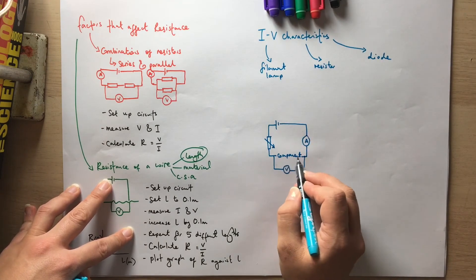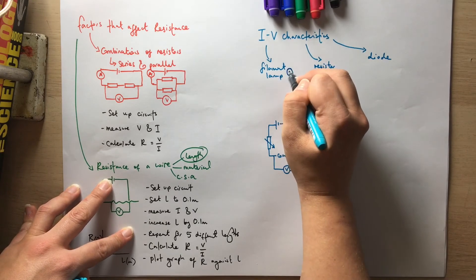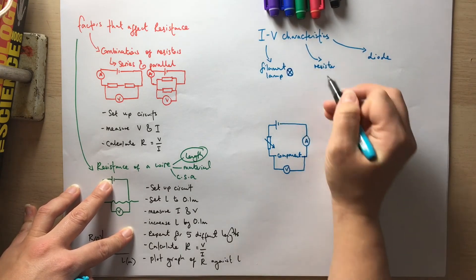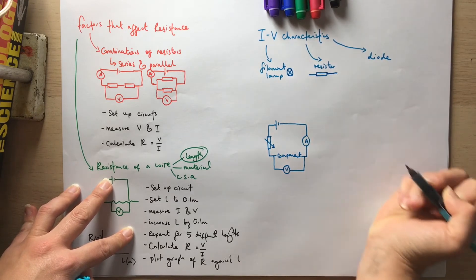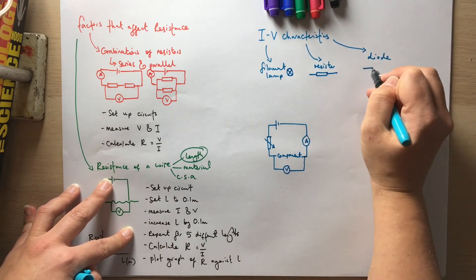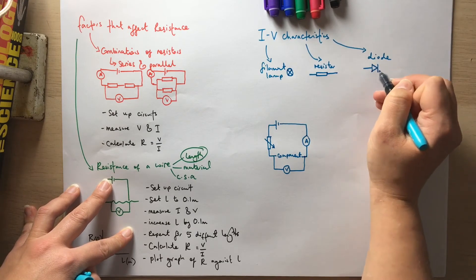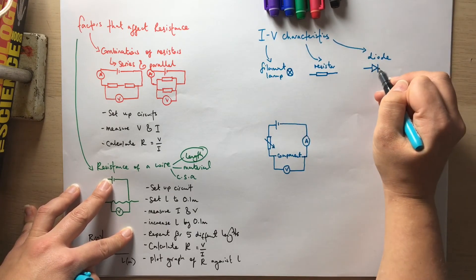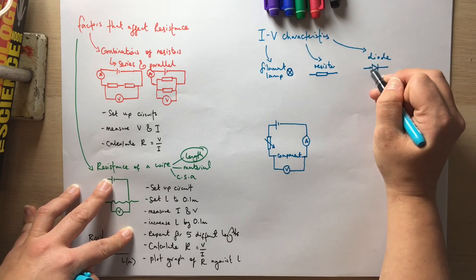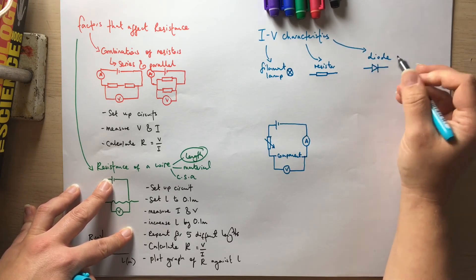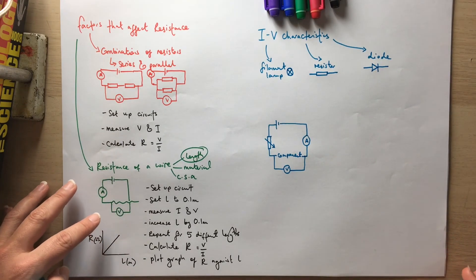You need to know the circuit symbols for each component. A filament lamp is a circle with a cross in it. A resistor is a rectangle. A diode is a triangle with a line at the pointed end — like an arrow — and you can draw a circle around it if you wish. Both forms are accepted as the symbol for a diode.